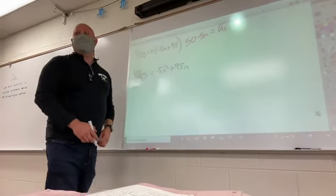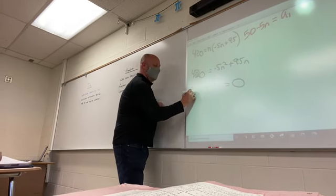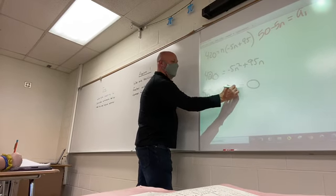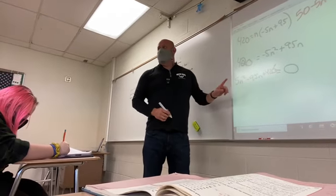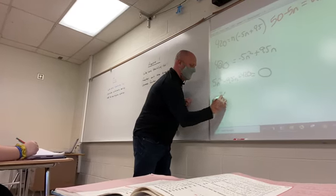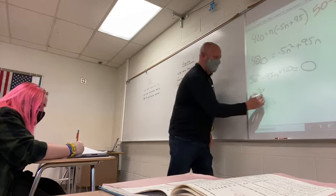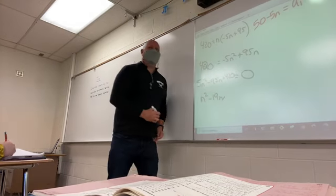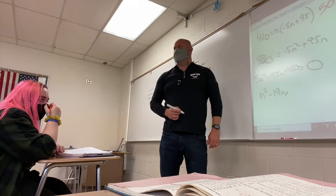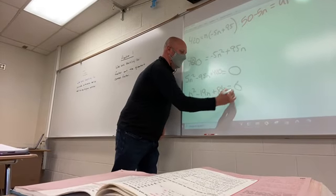I would make the right side 0 in this case. So I can make that 5N squared positive. Negative 95N plus 420. All right. We can make our life a little easier by dividing by 5, right? So N squared. What's 95 divided by 5? 19? 420 divided by 5. You've got to help me out on that one. 84. 84.